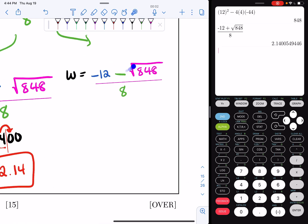Now I'm going to type this into my calculator. Alpha y equal enter, negative 12 minus the square root of 848 all over 8. I hit enter and I get a fun decimal. w equals negative 5.1400. I want to round to the nearest hundredth again. So I put my line here, look to the right. It's a zero. So this is going to stay as negative 5.14.